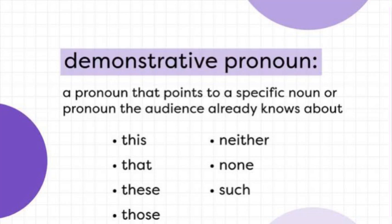Next type ہے demonstrative pronoun — جو کسی کی طرف نشاندہی یا اشارہ کرے۔ جب آپ کسی شخص، چیز یا جگہ کو figure out کرتے ہیں تو demonstrative pronoun استعمال ہوتا ہے۔ Definition: 'pronoun that points to a specific noun or pronoun that the audience already knows about'۔ مثال: آپ کے سامنے mobile phone پڑا ہے تو آپ بولتے ہیں 'I bought this mobile phone last night'۔ واحد قریب کے لیے 'this'، واحد دور کے لیے 'that'، جمع قریب کے لیے 'these'، جمع دور کے لیے 'those'۔